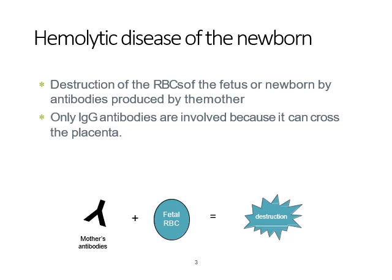Those with blood group A have antibodies to blood group B. Some of the food we eat contains antigen B or antigen A, so when we eat them the proteins get absorbed into the blood and the body produces antibodies. So normally, even without a transfusion, you already have antibodies to other blood groups. Blood group A has antibody to B, blood group B has antibody to A, blood group O has antibodies to both A and B, and blood group AB has no antibody because it contains both antigens.